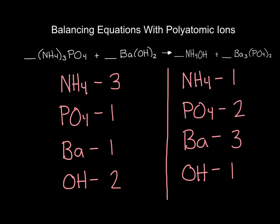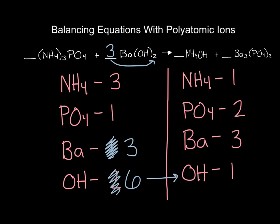To begin, we start with the non-polyatomic that's unbalanced: barium. On the reactant side we need three bariums, so I place a three in front of barium hydroxide. Recounting immediately: we now have three bariums and three times two, so six hydroxides on the reactant side. Following that to the product side, since I need six hydroxides and ammonium hydroxide has no extra subscripts, I place a six in front of ammonium hydroxide. That gives me six hydroxides and six ammoniums.